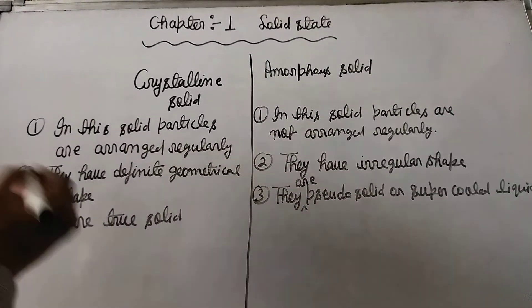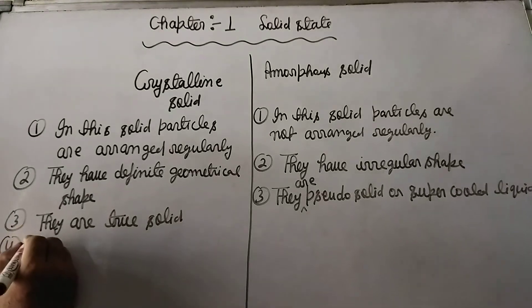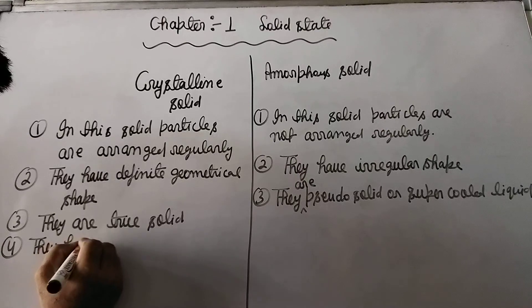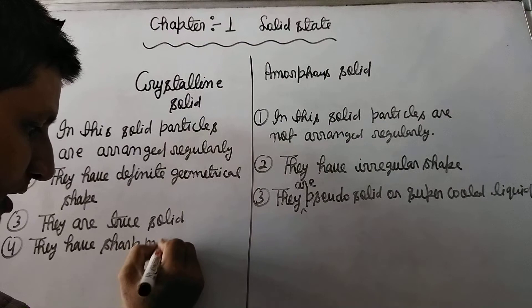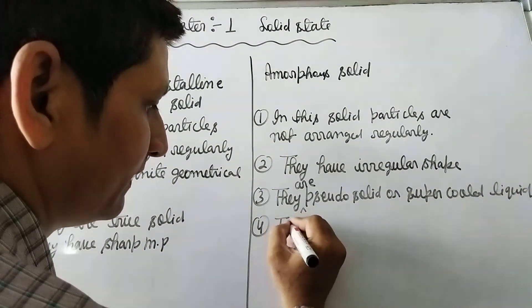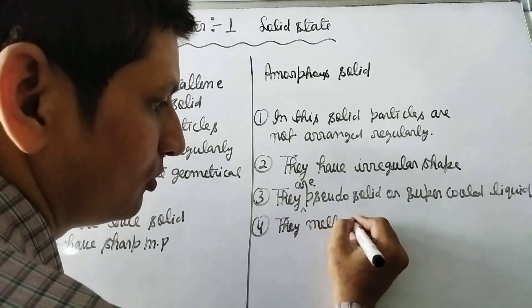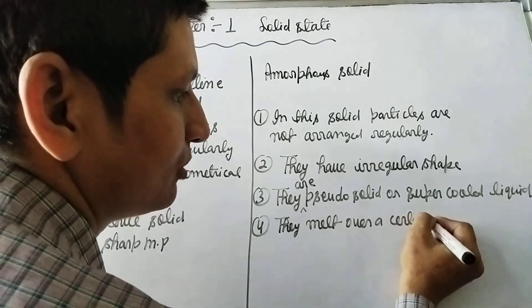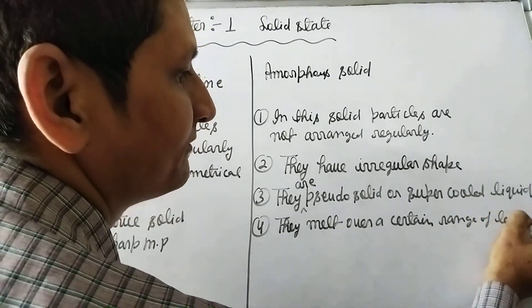Property 4: In crystalline solid, they have a sharp melting point. In amorphous solid, they melt over a certain range of temperature.